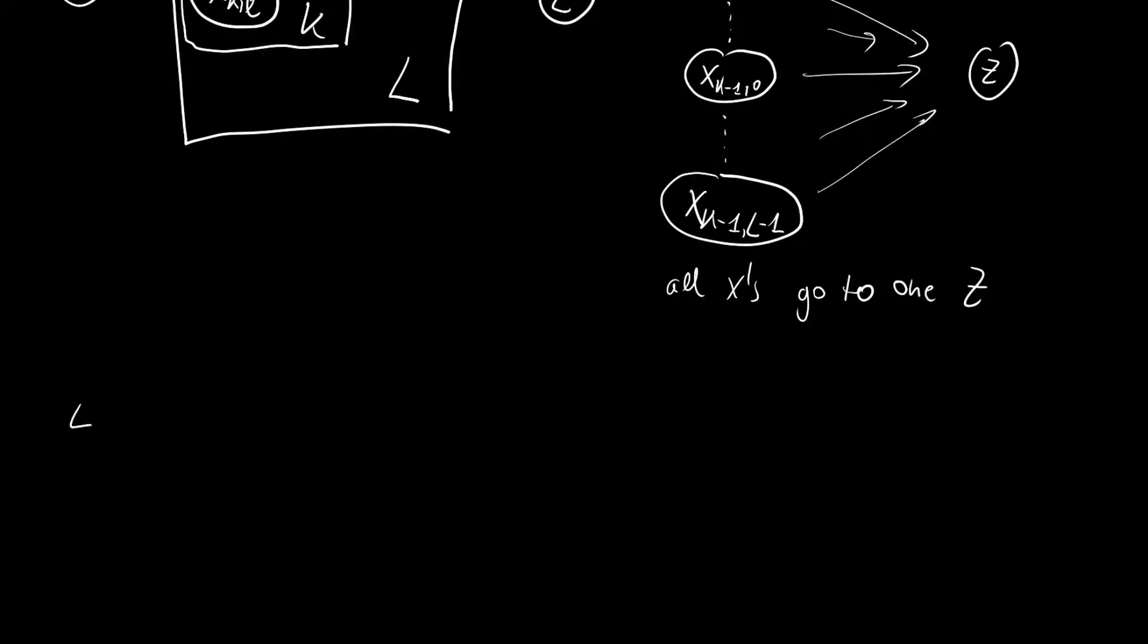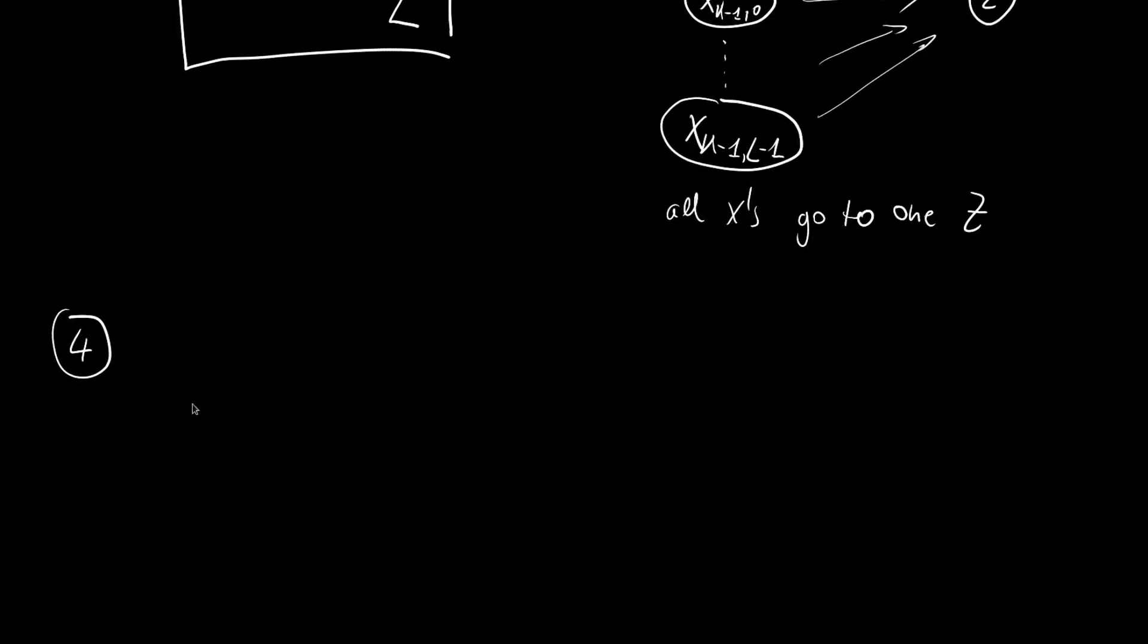And as a last example, we will look at the following. So we have one big plate, the l plate, and we have a k plate inside the l plate where we have our x kl and here we have a z l. How does this look like? So when we have only one l, then all of the k's are going to this one l. And then so to say the relation between the two depends on the l.